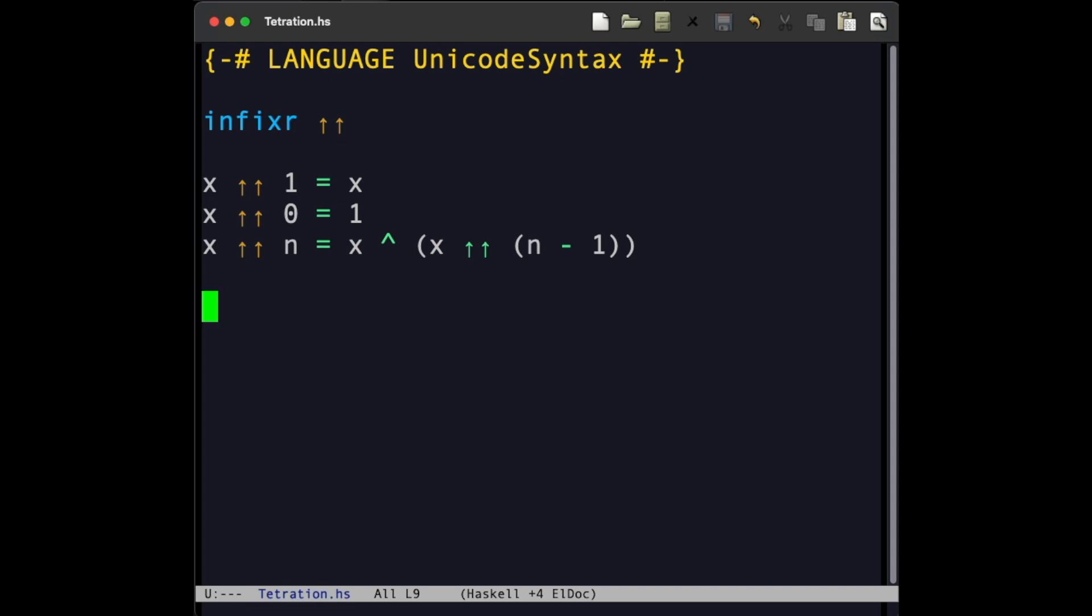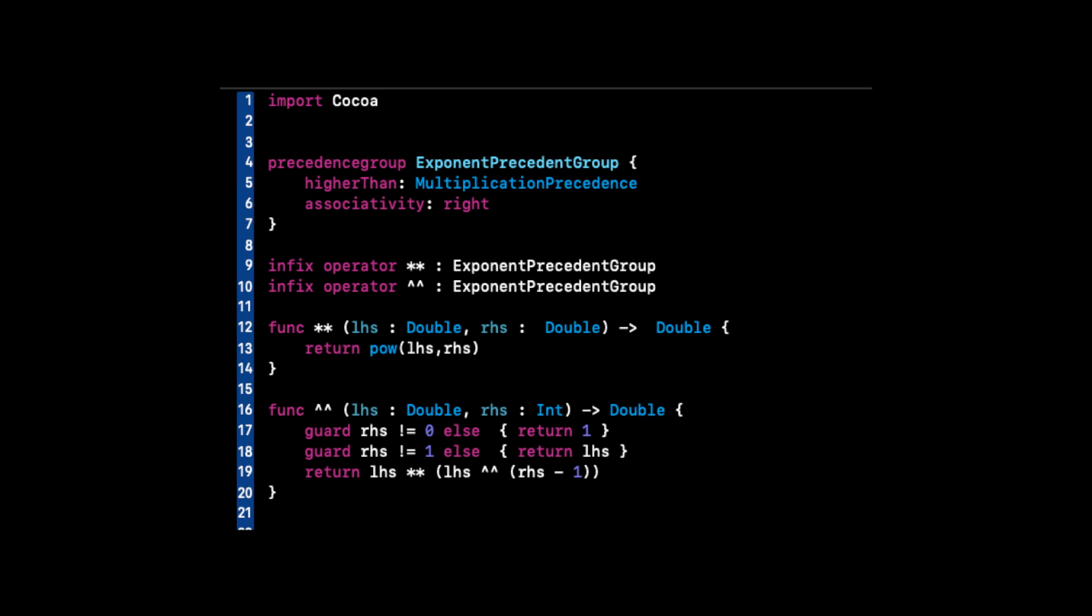Haskell is one of those cool languages that lets us define our own infix operators. We're also using a Unicode double-arrow because it's cool, and because Haskell already uses the double-carat for another operator. We also have a version in Swift using the double-carat as the operator. We'll make the source code for both versions available in the links below.